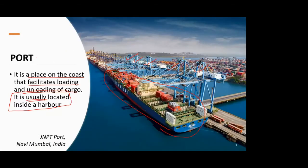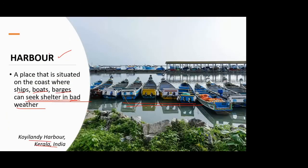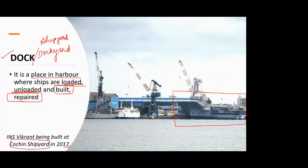Quick revision: harbor is any place along the coast where ships, boats, barges, or any floating vessel can take shelter — maybe in bad weather or just as a resting place. Port is specifically where you have loading and unloading of cargo, and it is usually located inside a harbor. Dock is a place within the harbor where you can have loading and unloading of ships along with building and repairing works of the ship. That's the difference between all three terms.